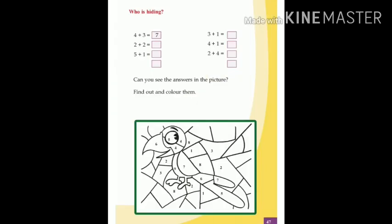Now you want to find who is hiding. For that, you can see some numbers there. The first one is 4 plus 3 equals 7, like that. Add every number. And you can see those numbers in that puzzle. Color those numbers in the puzzle. Then you can understand who is hiding there. So everyone do that.